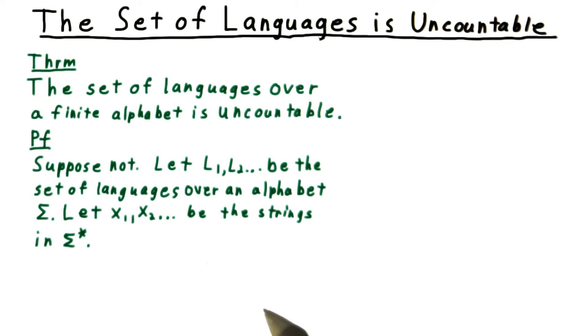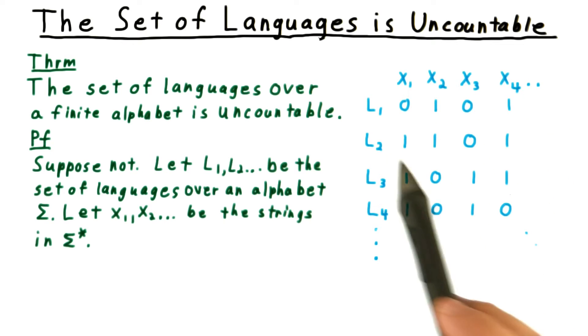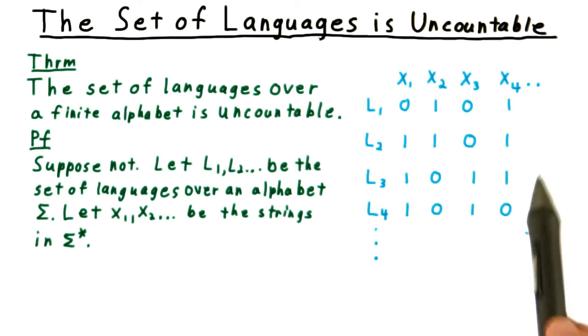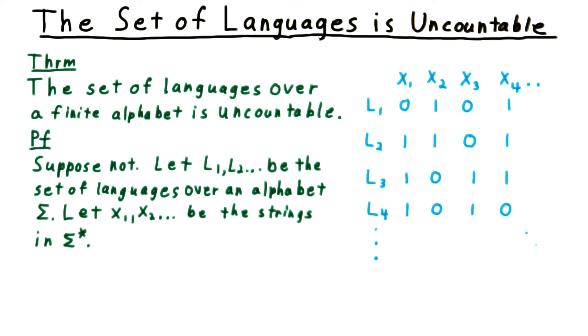We know that has an enumeration. We are then going to build a table where the columns correspond to the strings in sigma star, and the rows correspond to the languages. In each element in the table, we'll put a 1 if the string is in the language, and we'll put a 0 if it is not.